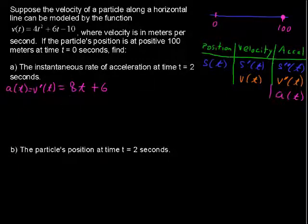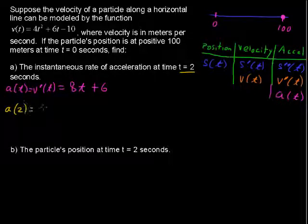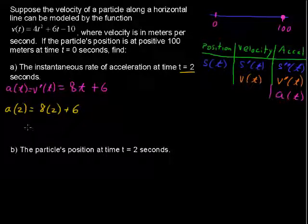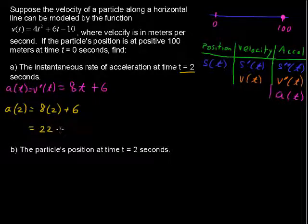So now we have the acceleration function. And all we have to do is plug in time equals 2 seconds. So a(2) = 8 times 2 plus 6. And 16 plus 6 is 22. So we have 22 meters per second squared.